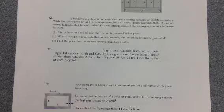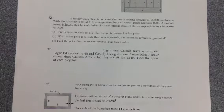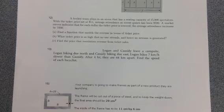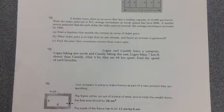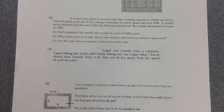Anyway, Logan is biking slower than Cassidy. He's probably crying, and after four hours they turn out to be 68 kilometers apart. So the question is how fast was each bicyclist going. Not a realistic problem but a fun problem nonetheless.